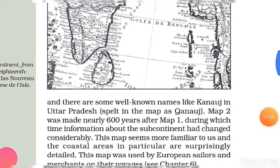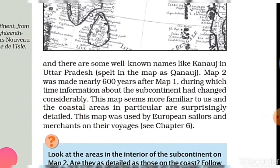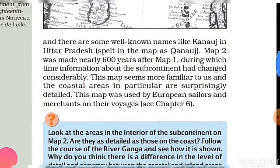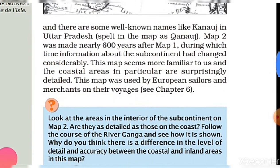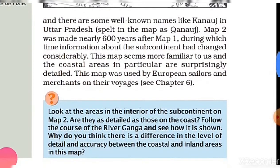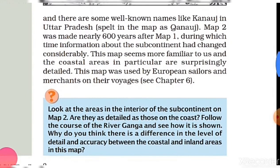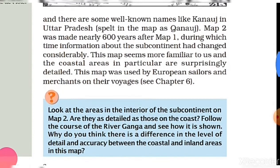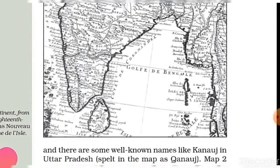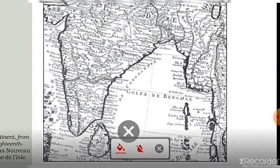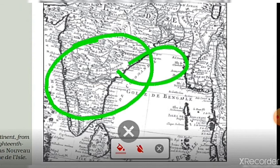Both maps are quite different even though they are of the same area. In Al-Idrisi's map, south India is where we would expect to find north India, and Sri Lanka is the island shown at the top. All place names are marked in Arabic form, so we can't read the names of the regions.